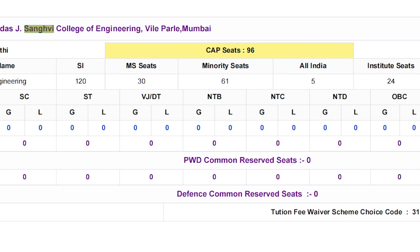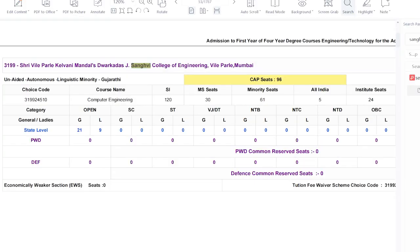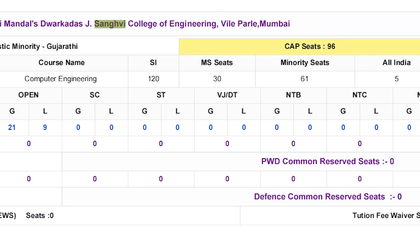There is also an institute quota for offline admission — 24 seats are for offline and 96 seats are for online admission. Here, MH seats means Maharashtra state seats. Out of those 96 online seats: MHT-CET seats are 30, minority seats are 61, and JEE seats are 5 — that is how the 96 online seats are distributed.